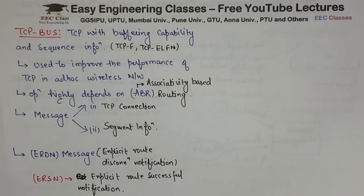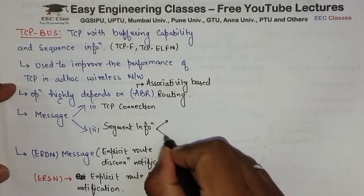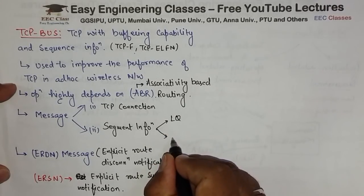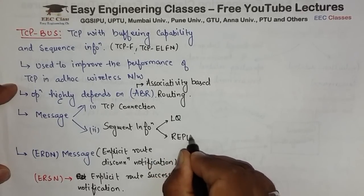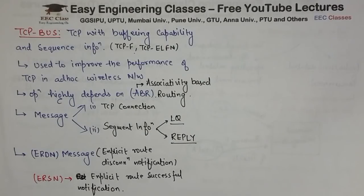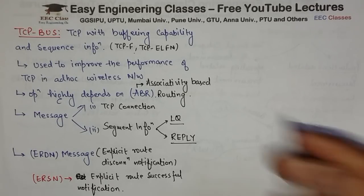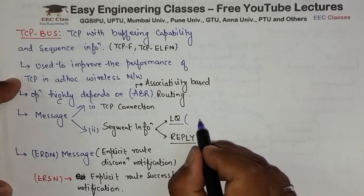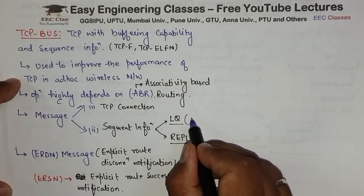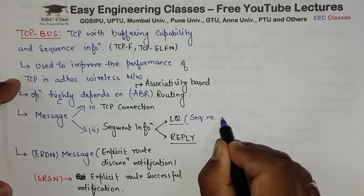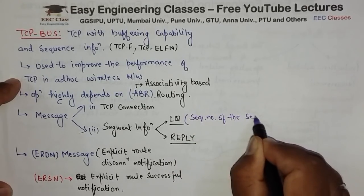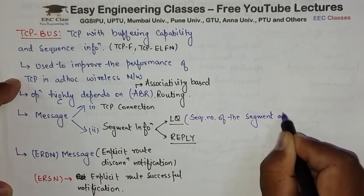Ab dekho is mein jo segment ke information hai, segment ke information ko batane ke liye do different messages ka use hota hai, and those messages are LQ and Reply. LQ aur Reply ka use kahan pe hota hai — jab aap segment ke information ki baat karte ho. LQ packet carries the sequence number of the segment at the head of the queue, at the pivot node (PN).